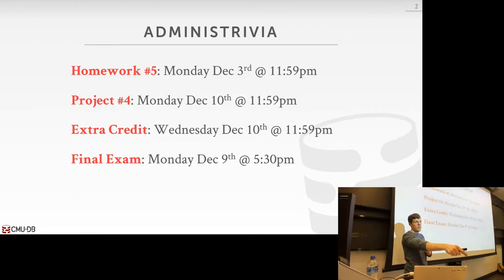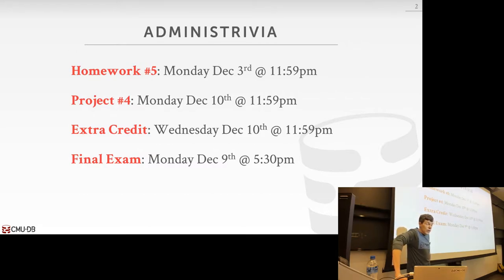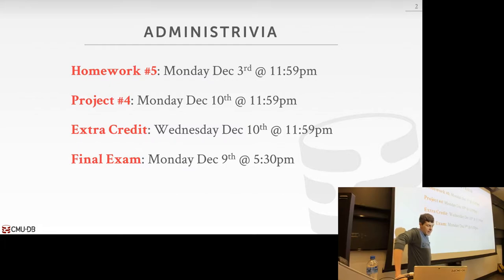Student question about preference order before taking advanced database and whether the results of the petition are available. The instructor responds that they have not heard back yet, sent it on Monday, and it takes a week or two. If results come in, they will announce it on the last day of class.